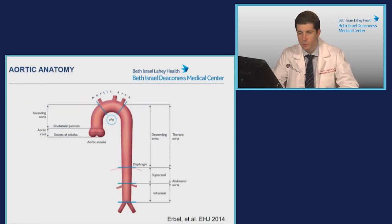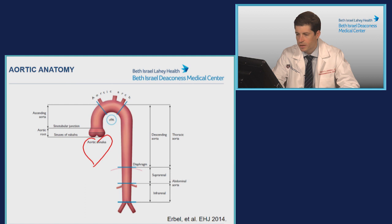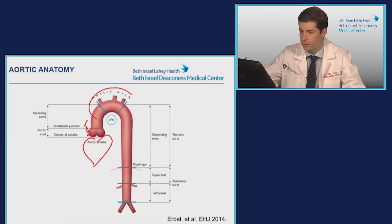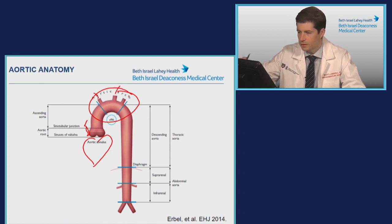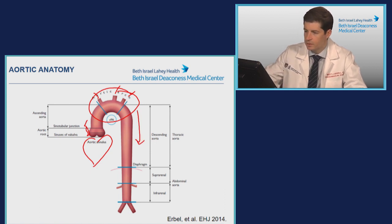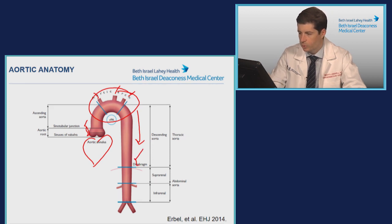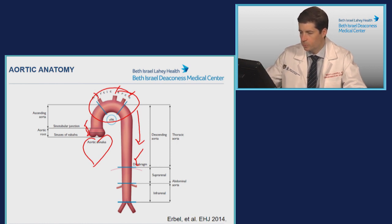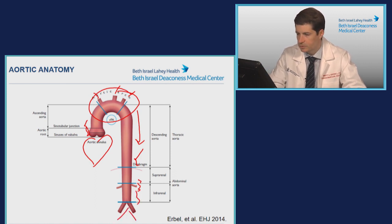A simple schema of the aorta includes, coming out from the heart, the aortic root with the sinuses of Valsalva, extending with the transition into the ascending aorta at the sinotubular junction. You have the aortic arch with three branches for most patients, including the brachiocephalic, left common carotid, and the left subclavian artery. After the left subclavian artery, you have the descending portion of the aorta. The aorta's normal diameter will taper as you get more distal, and as you cross the diaphragm, it becomes the abdominal aorta with the suprarenal, pararenal, and infrarenal segments before branching into the iliac arteries bilaterally.